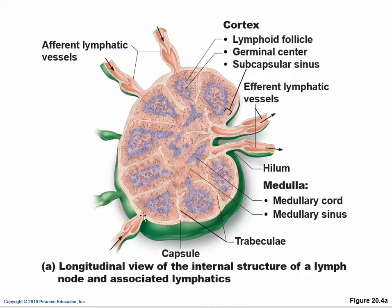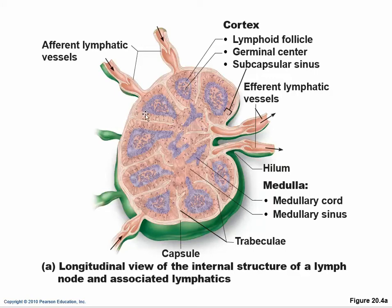The capsule, which is dense irregular connective tissue around the outside, has extensions that come in and form walls inside called trabeculae. The trabeculae are really about increasing surface area so that lymph flowing in has to travel along extended pathways to get out. This creates an extended pathway because as lymph flows through these areas, it comes in contact with macrophages and lymphocytes — and we want as much of that contact as possible.